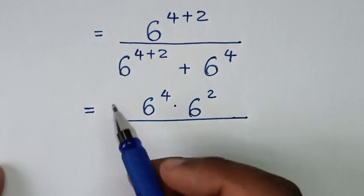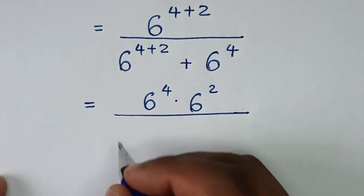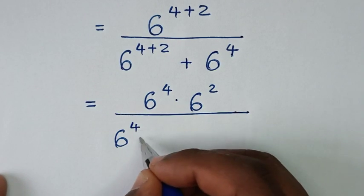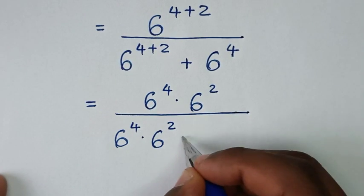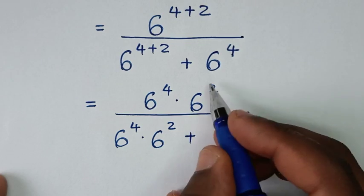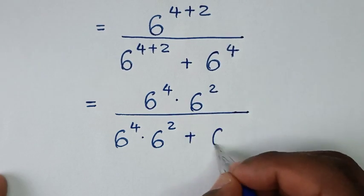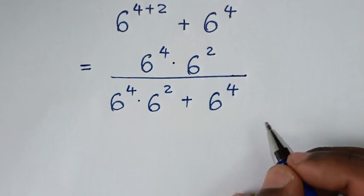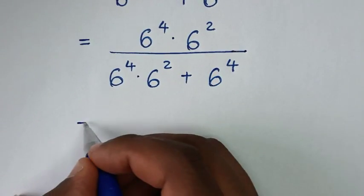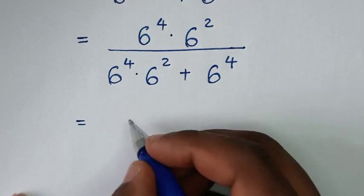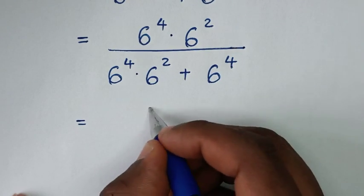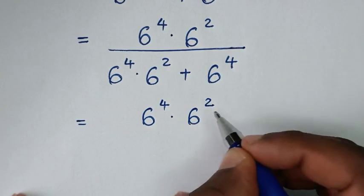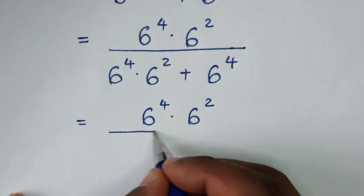Then over, 6 power 4 plus 2 is the same as 6 power 4 times 6 power 2, then plus 6 power 4. It will be equal to: in the numerator we write 6 power 4 times 6 power 2.